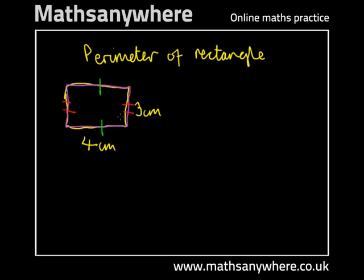Because you've got a measurement for this side you can say confidently that the opposite side is also the same length, in this case 3 centimetres. Again, you've got one measurement of 4 centimetres here, the opposite side is also 4 centimetres.